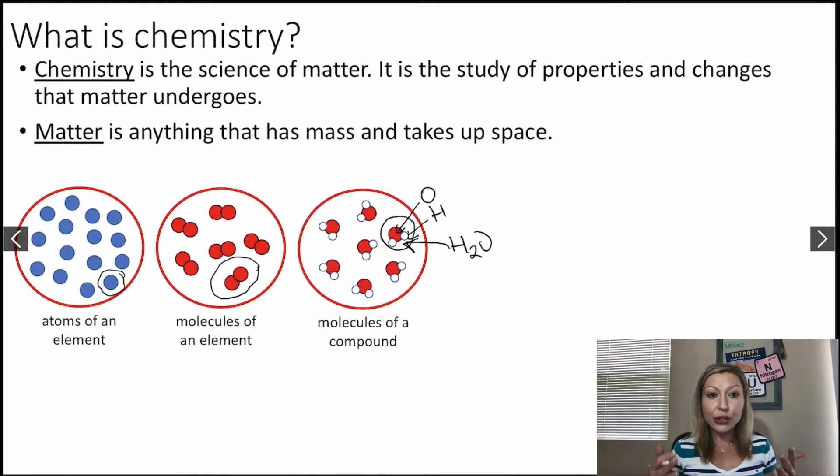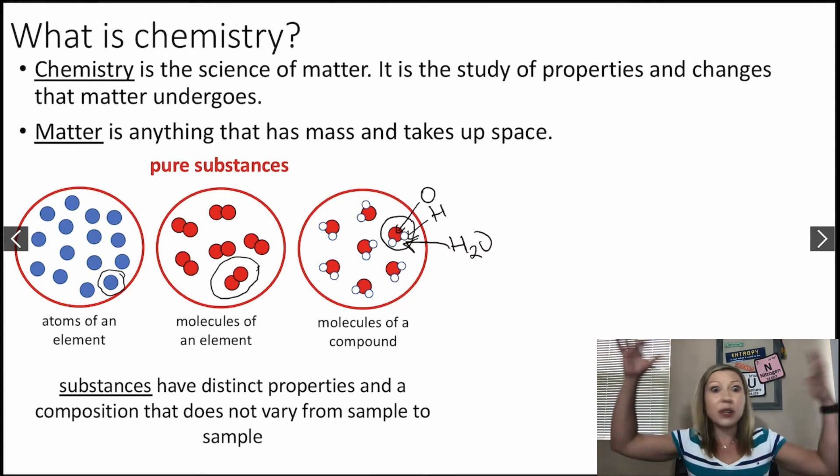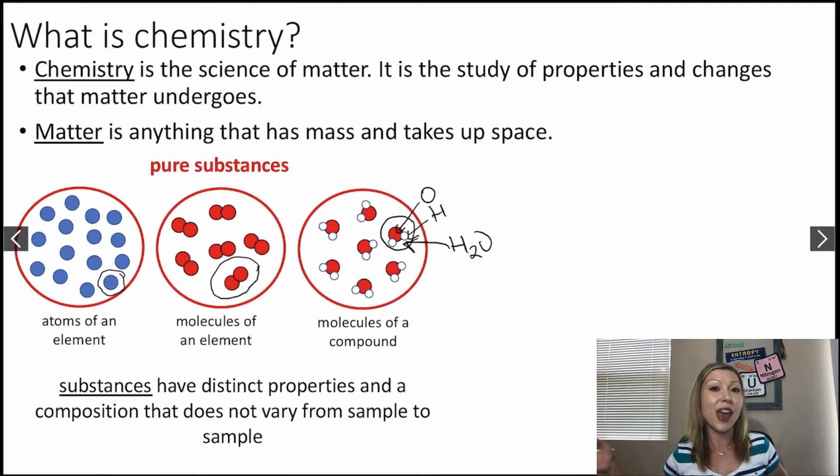Okay, so now all these three types of matter are going to be pure substances. Okay, now what is a substance? A substance is going to have a distinct property and a composition that does not vary from sample to sample. So this means that if I have water, which is H2O on Earth, it's also going to be H2O anywhere in the universe. Okay, so on any other planet, H2O is going to be water.